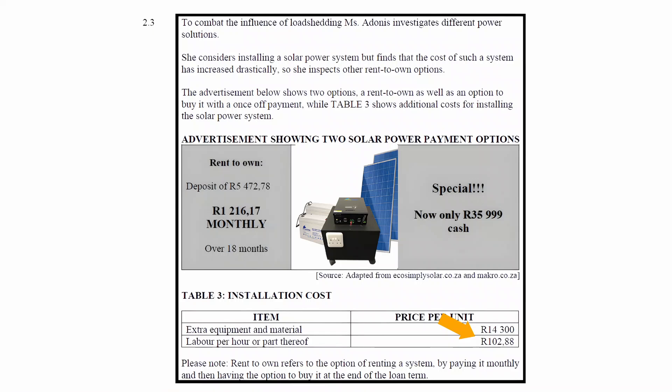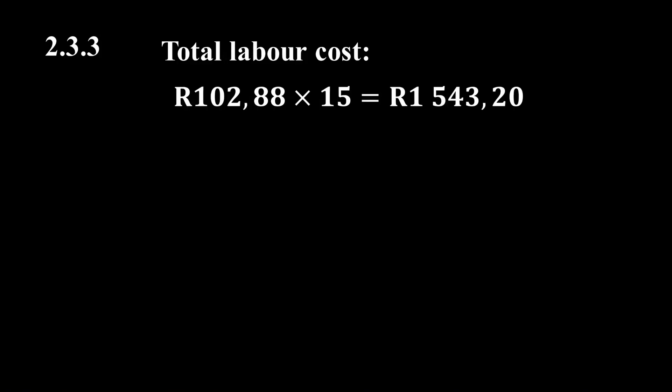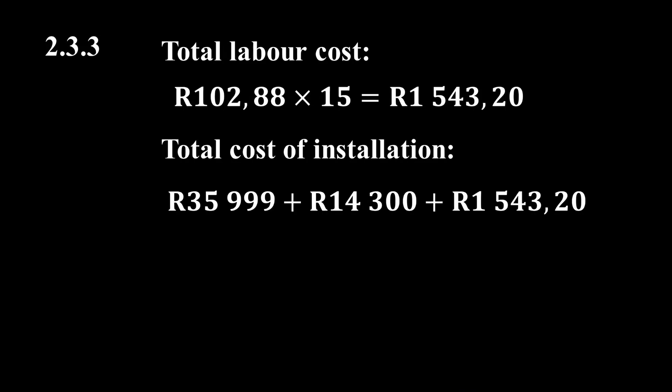To calculate the total labour cost, we multiply the cost per hour by 15 hours, giving a total labour cost of R1,543.20. The total cost to install the cash option solar power system is therefore R35,999 + R14,300 + R1,543.20, which equals R51,842.20.